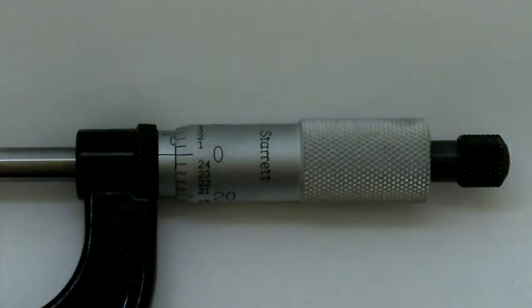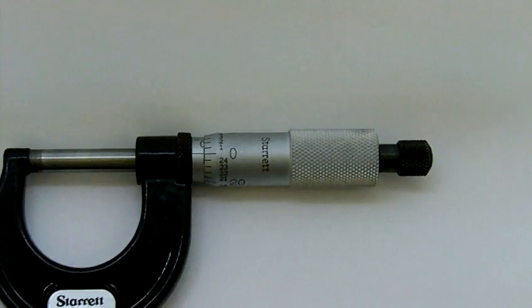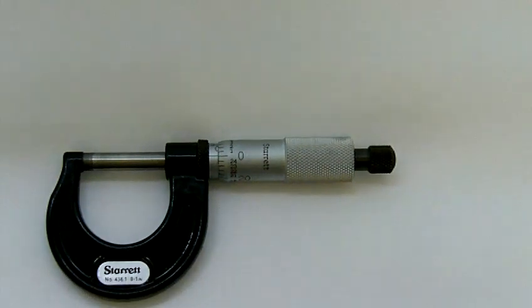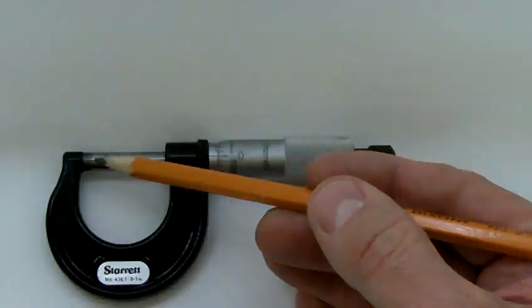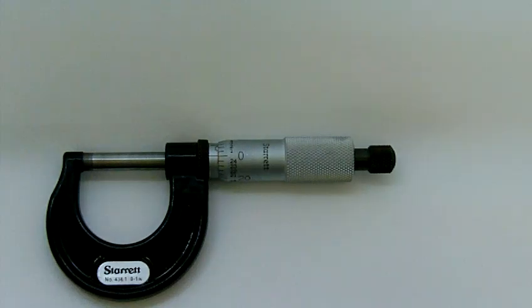Because this is a zero to one inch micrometer, the anvil and the spindle are going to touch each other. Any micrometer will have a range of one inch, so zero to one, one to two, two to three, or 25 millimeters. Zero to 25 millimeter where the anvil and spindle will touch, 25 to 50 millimeters where they will be apart.